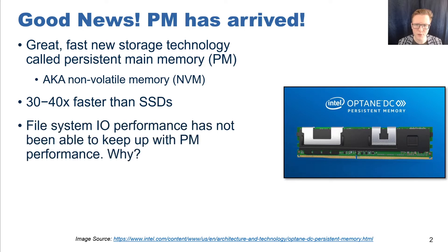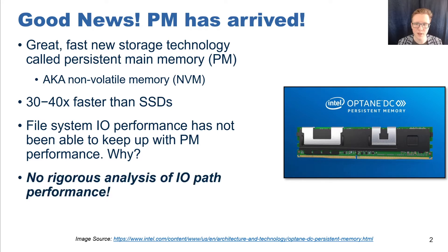However, there's still room for improvement, as IO performance of modern persistent memory file systems is not able to keep up with the raw bandwidth of persistent memory. In trying to discover what else we can do to optimize these file systems, we noticed that there has not been any rigorous analysis of all the components that contribute to the overhead of the IO path. We believe that this is an overlooked source of performance issues in persistent memory file systems.